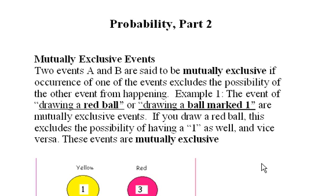Probability Part 2. We're going to talk first about mutually exclusive events. Two events, A and B, are said to be mutually exclusive if the occurrence of one of the events excludes the possibility of the other event from happening.